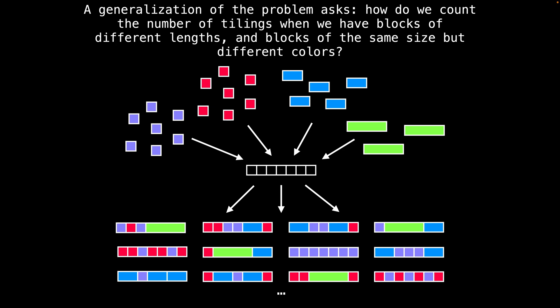You can have a purple block, a red block, a purple block followed by a green block, or maybe two red blocks, two purple blocks, a blue block, followed by a red block, and so on.